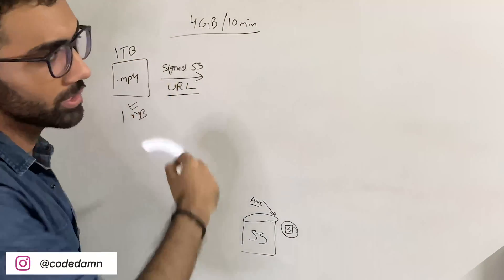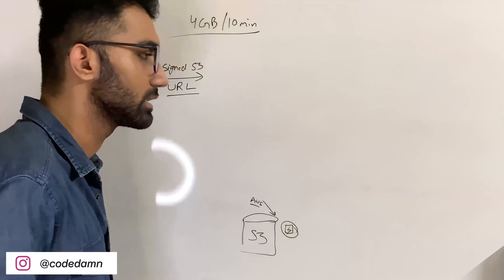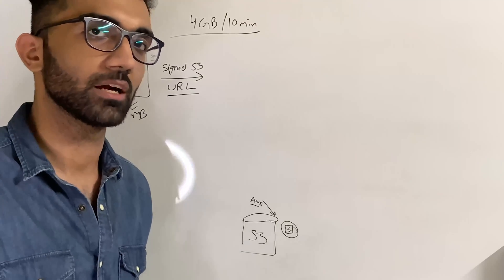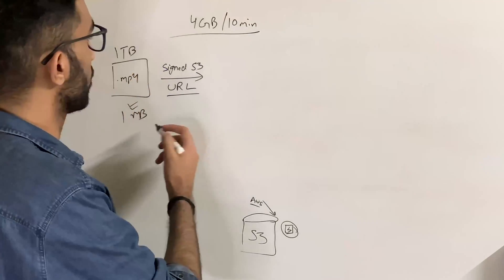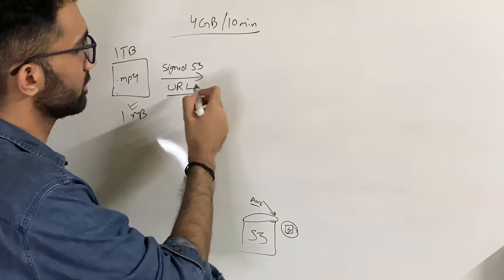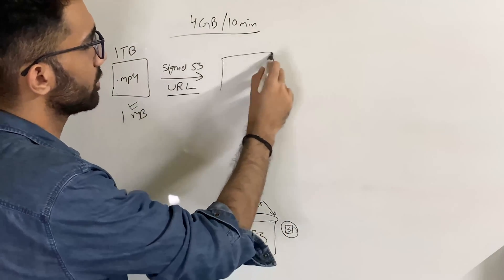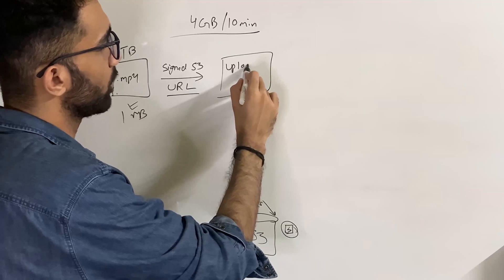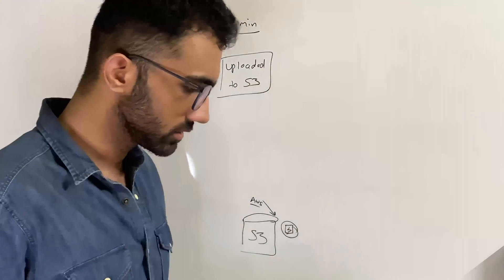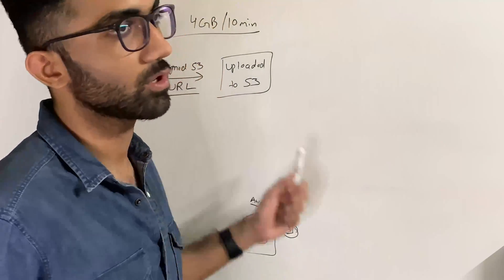If you route it through your own server, you'd have to make sure your server can handle files of that size. Instead, you create a signed URL from S3 and upload directly to the S3 bucket. This is where the fun begins — you now have the file on the cloud.